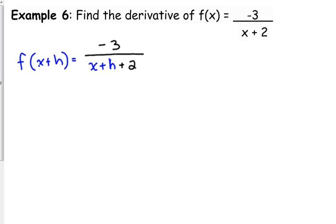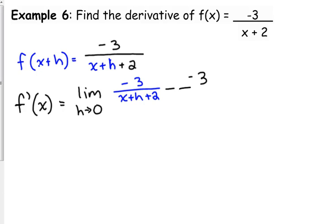So, let's plug it into our limit definition. First of all, let me label this as this is f prime of x. This is the derivative of f. It is equal to the limit as h approaches 0 of negative 3 over x plus h plus 2 minus f of x negative 3 over x plus 2. So, all of that is over h.